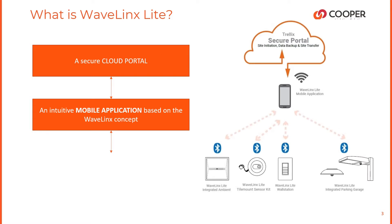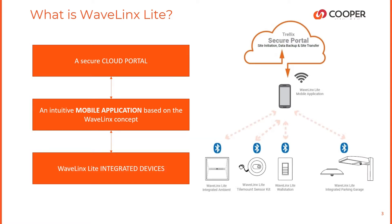Second, the Wavelinks Light application utilizes an internet connection to your Trellix secure cloud portal. This cloud portal is used to register the user account, create project sites, backup project site data, transfer ownership of project sites, and enable access to system and device upgrades. The cloud portal is not used for commissioning the system or for system operation — that is all accomplished with the Wavelinks Light application directly in the space.